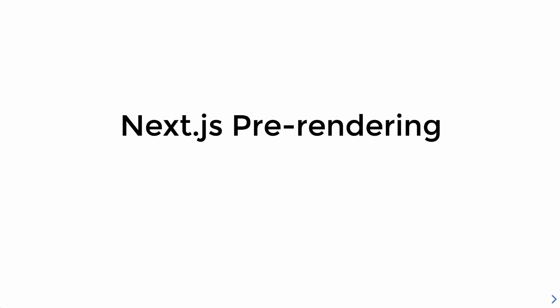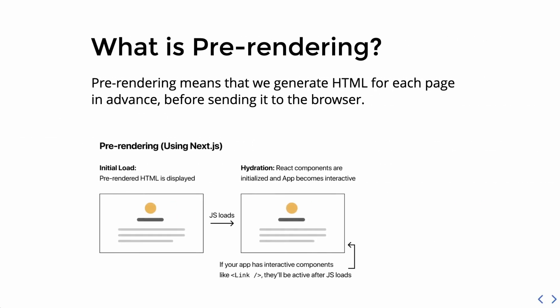Today I want to teach you about pre-rendering and how it works in Next.js, because pre-rendering is one of the most important things in Next.js. Understanding it will help you avoid mistakes and achieve the best possible performance for your own Next.js application. Basically, pre-rendering means that we generate the HTML for a page in advance instead of doing it with client-side JavaScript — we generate the HTML on the server and then send that HTML to the browser.